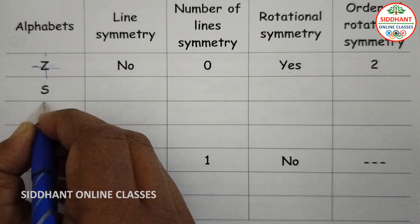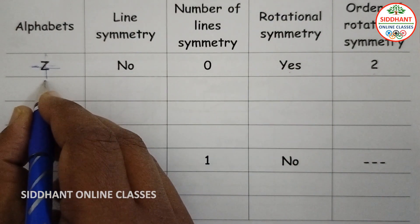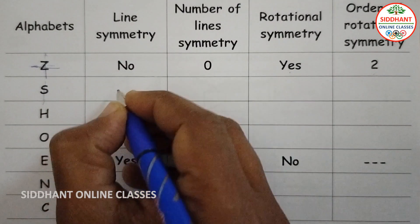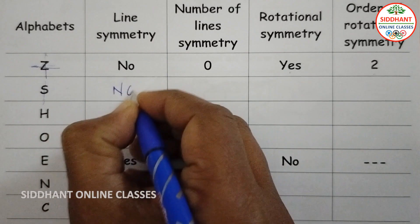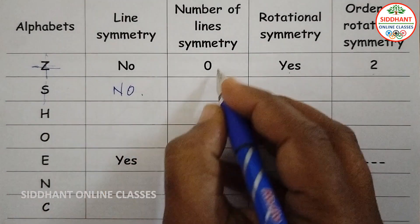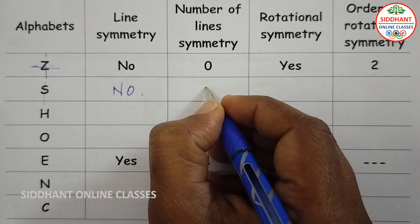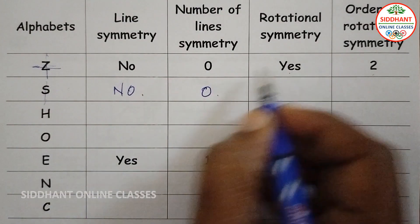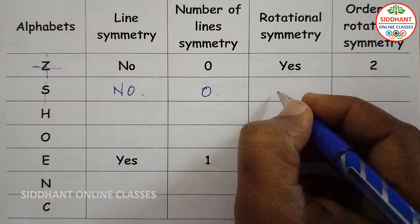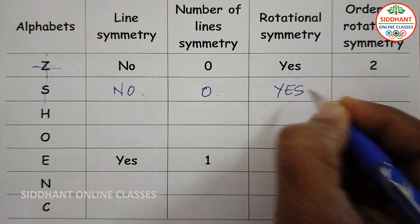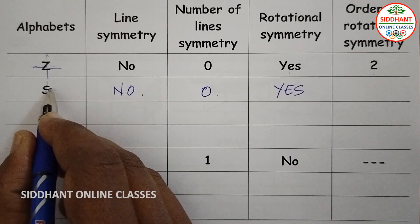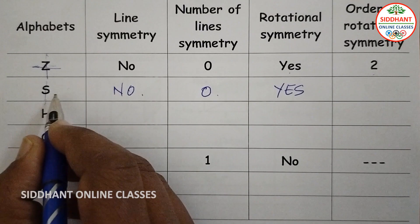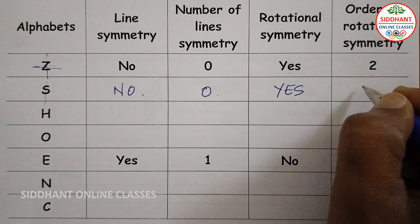Next, the letter S. When you go vertically or horizontally you won't get any line of symmetry. So the number of lines is 0. For rotational symmetry, when you rotate 90 degrees you get a match, and another 90 degrees gives 2 rotations. So rotational symmetry is Yes, and the order is 2.